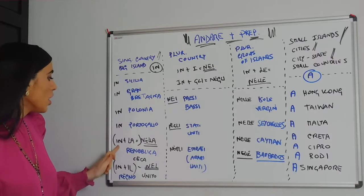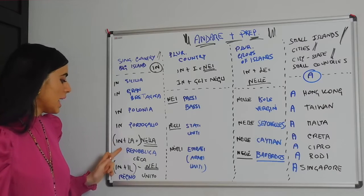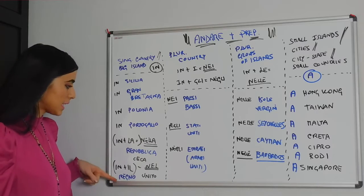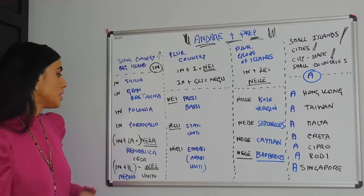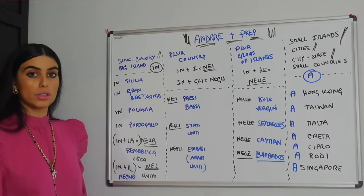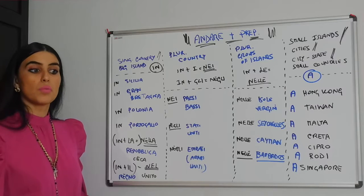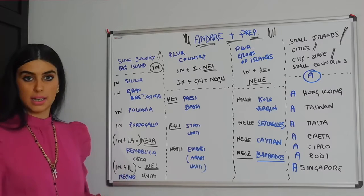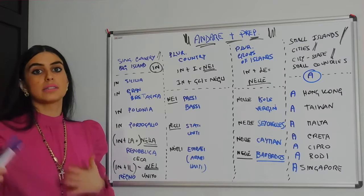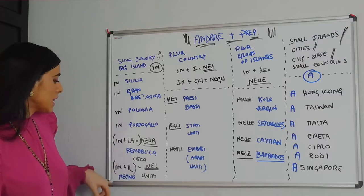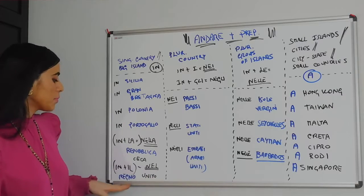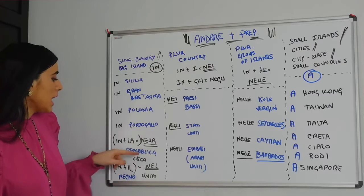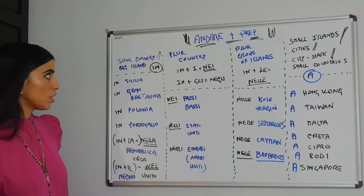With the words Repubblica and Regno — meaning Republic and Kingdom — we do need to use the article. Repubblica is feminine, so it becomes La Repubblica, meaning we say nella Repubblica Ceca, or nella Repubblica Slovacca. And in plus il becomes nel, so it would be nel Regno Unito.